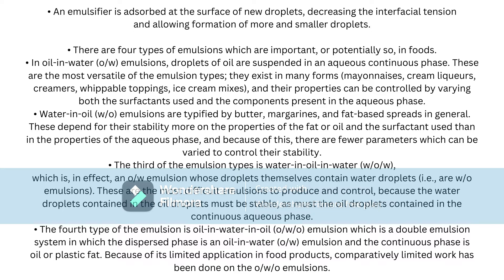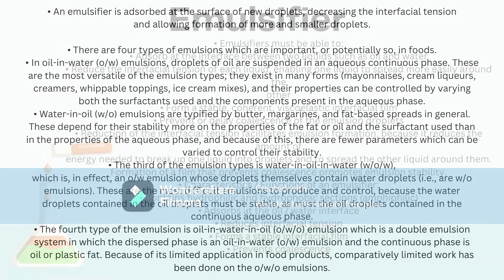The third emulsion type is water-in-oil-in-water, which is in effect an emulsion whose droplets themselves contain water droplets. These are the most difficult emulsions to produce and control because the water droplets contained in the oil droplets must be stable, as must the oil droplets contained in the continuous aqueous phase. The fourth type is oil-in-water-in-oil emulsion, a double emulsion system in which the dispersed phase is an oil-in-water emulsion and the continuous phase is oil or plastic fat. Because of its limited application in food products, comparatively limited work has been done on oil-in-water-in-oil emulsions.